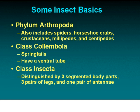Now for some insect basics — this has actually changed recently. We now have a new class of critters: springtails are now Class Collembola. We also have Class Insecta, so now we have two classes to deal with rather than just Insecta. Both are in the phylum Arthropoda, which includes spiders, horseshoe crabs, crustaceans, millipedes, and centipedes — all of which, except horseshoe crabs, can be sent in for identification and may be considered pest species.